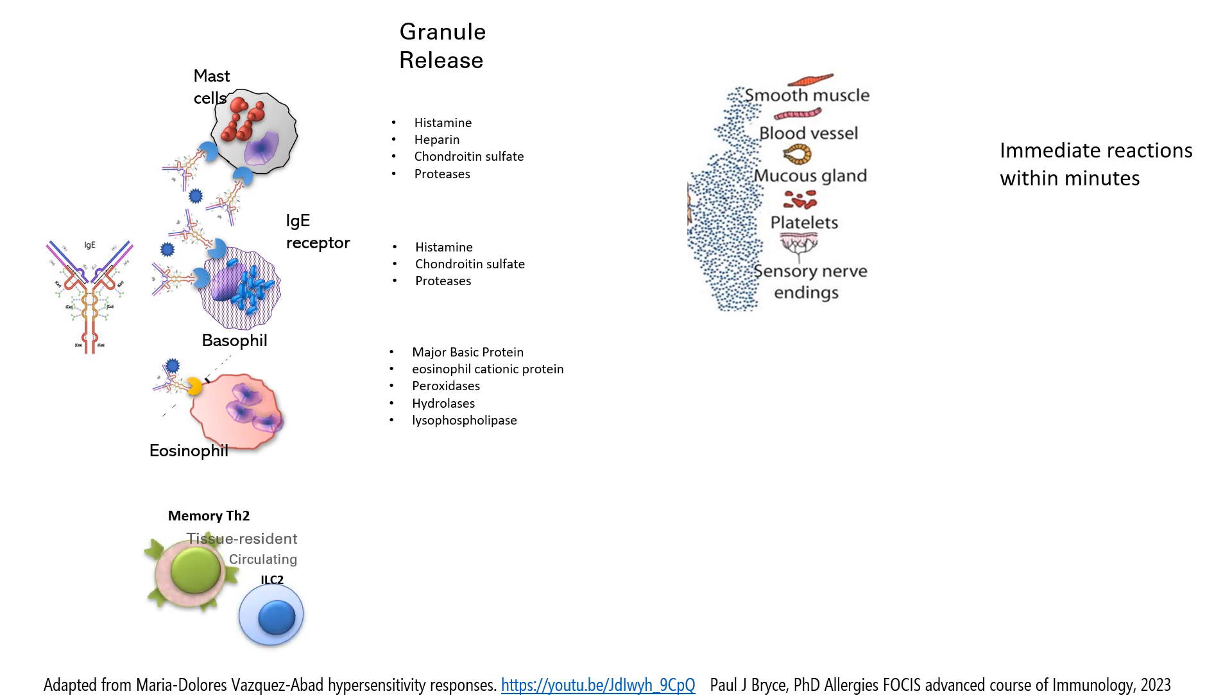On the other hand, we have IgE independent responses, as we saw already, which are part of this type 1 hypersensitivity reaction. The Th2 and ILC2 cells also create memory against those allergens, and they express several different receptors that identify them.